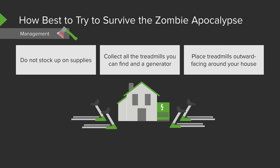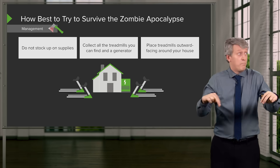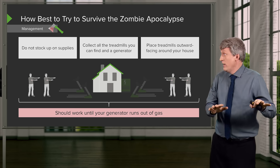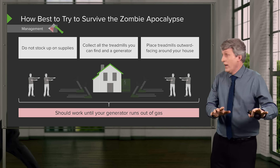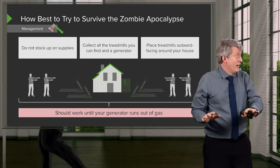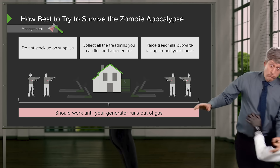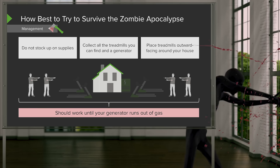Then, you should place treadmills outward facing around your house. And when you plug them in, the zombies won't be able to get into the house. And this should work perfectly well until you run out of gas and...